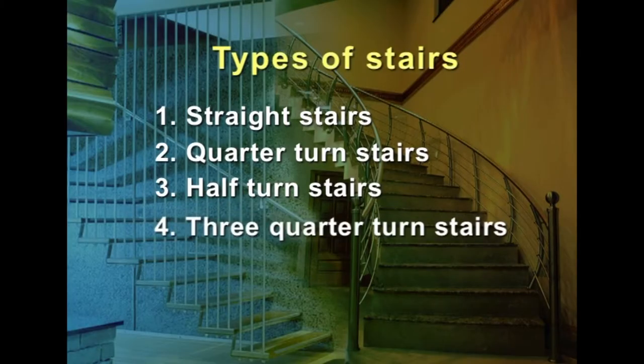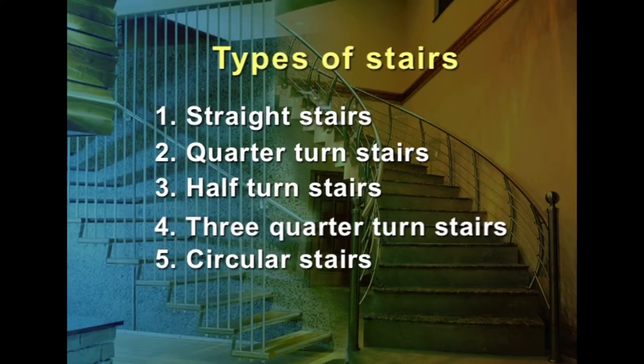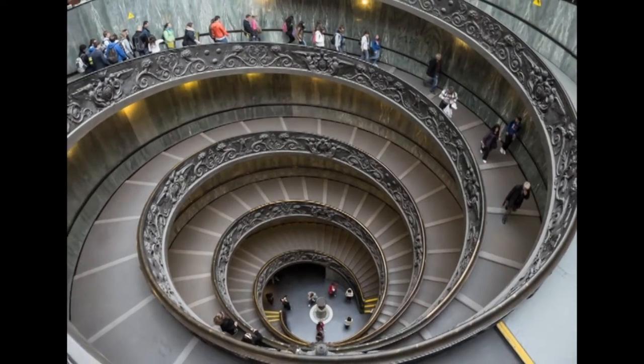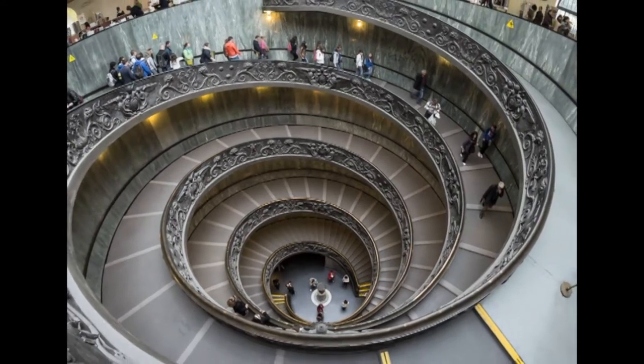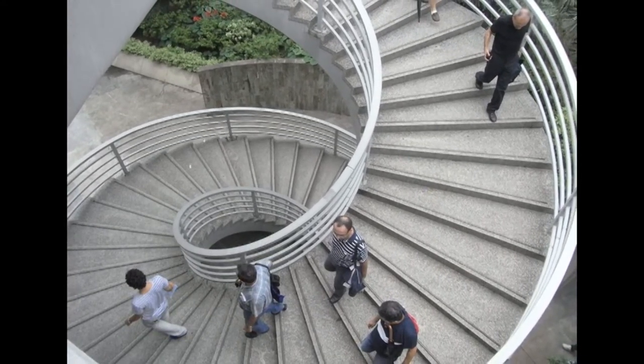Three-quarter turn stairs change direction through 270 degrees — that is, direction is changed three times — with the upper flight crossing the bottom one. In this type of construction, an open well is formed. Circular stairs, when viewed from above, appear to follow a circle with a single center of curvature and large radius. They are generally provided at the rear of the building to give access for servicing at various floors. All the steps radiate from a newel post in the form of winders. These stairs can be constructed in stone, cast iron, or RCC.